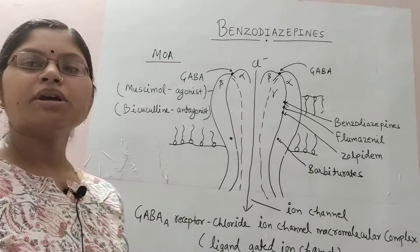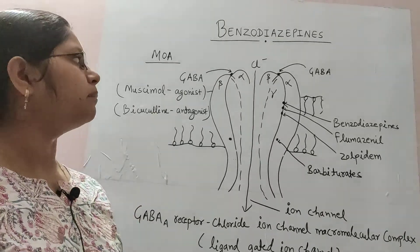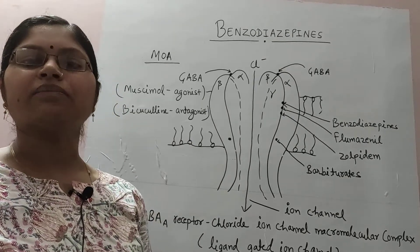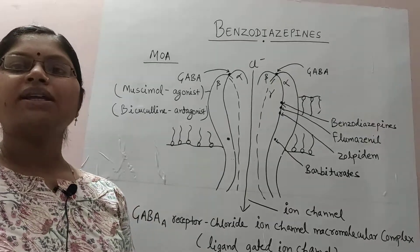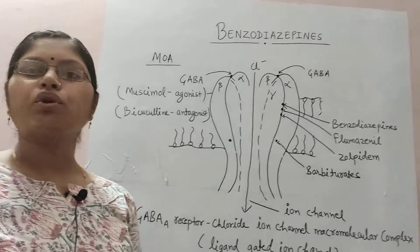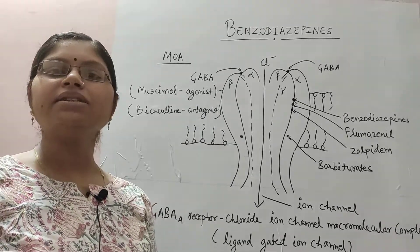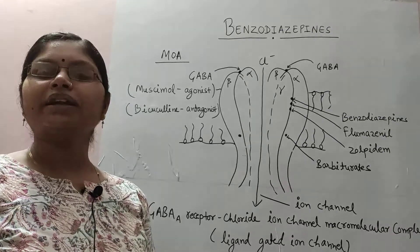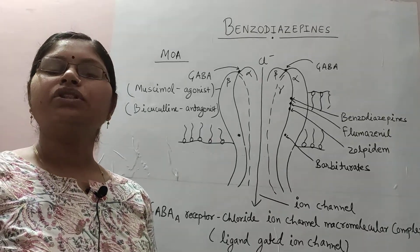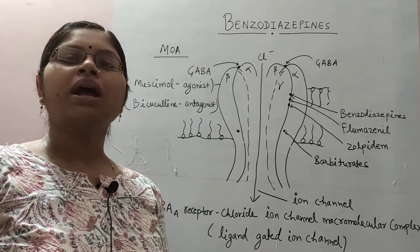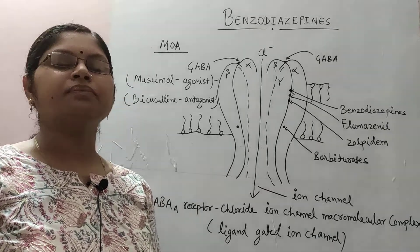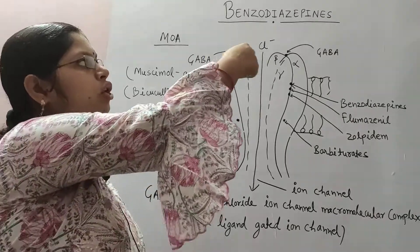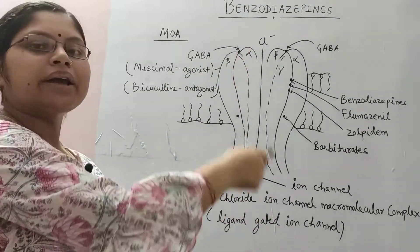Coming to the mechanism of action of benzodiazepines: benzodiazepines have a GABA facilitatory action, and through this action they increase the opening time of chloride ion channels. An increase in the opening time of chloride ion channels leads to a greater influx of chloride ions, resulting in hyperpolarization and hence muscle relaxation. This occurs because benzodiazepines bind to the GABA-A receptor.